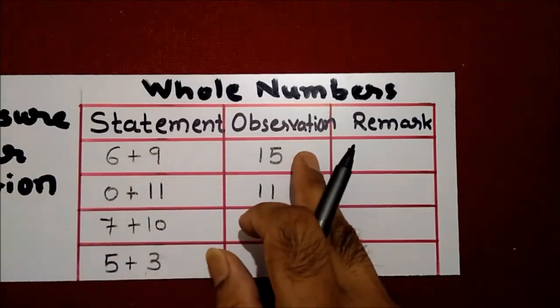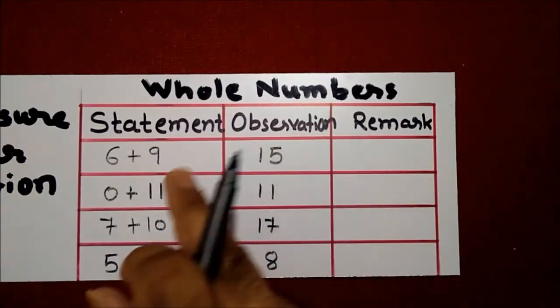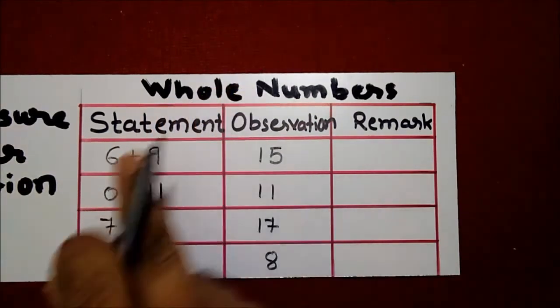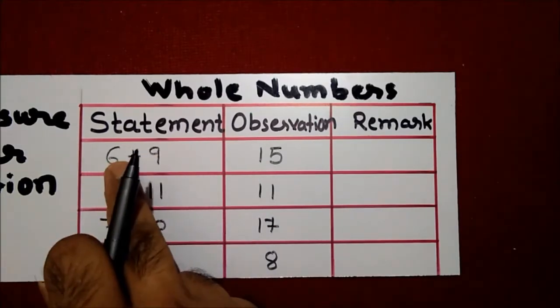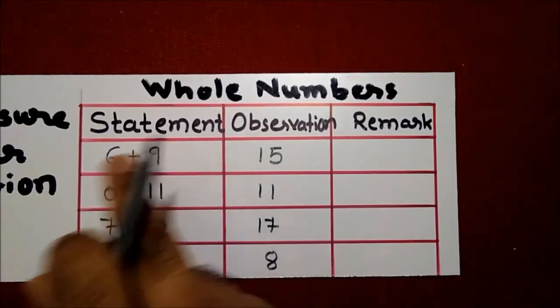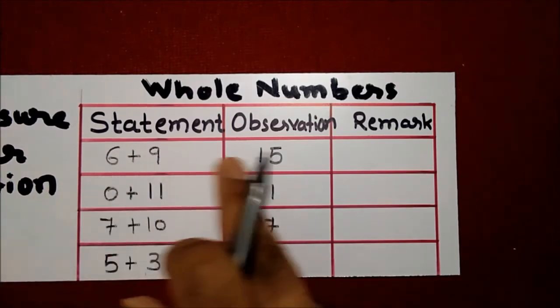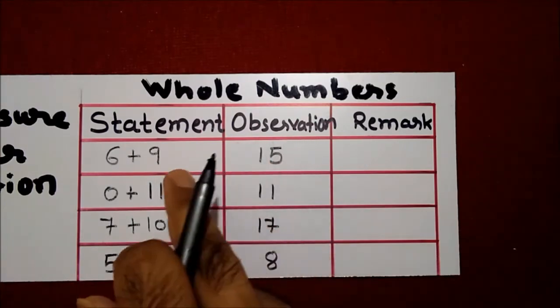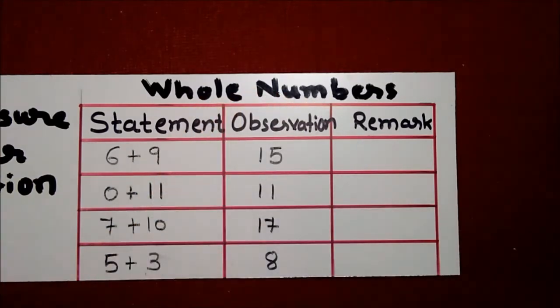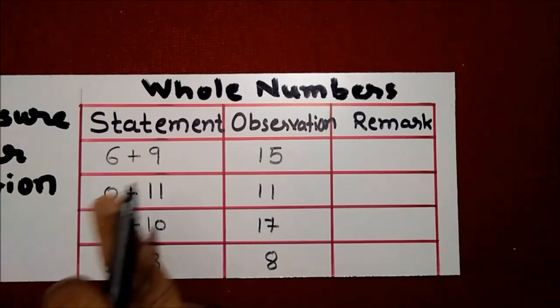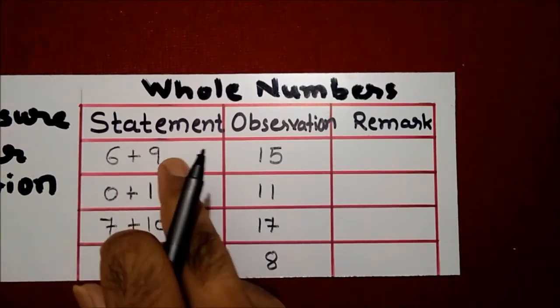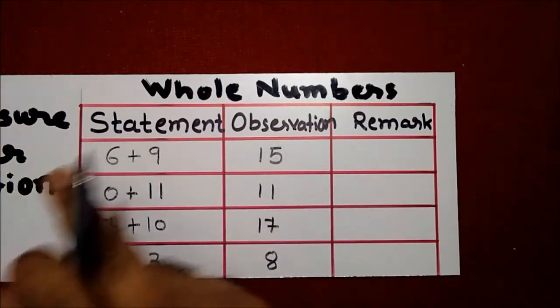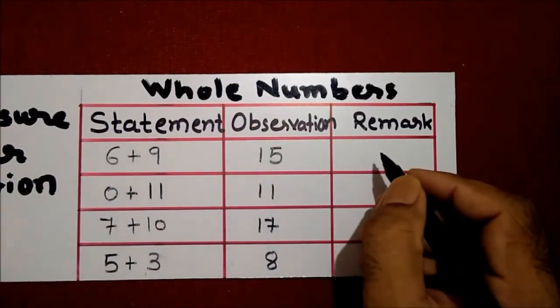For addition, we can check what we can get. So we know that whenever we are taking two whole numbers, any two whole numbers, and when we carry out the addition procedure, the answer is nothing but whole number only. The answer is always whole number, means the remark will be closed.